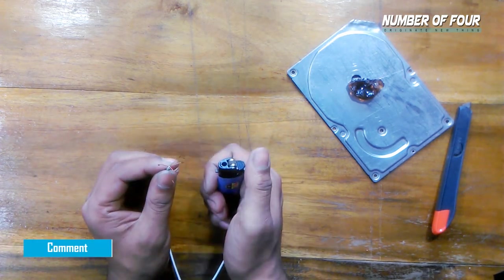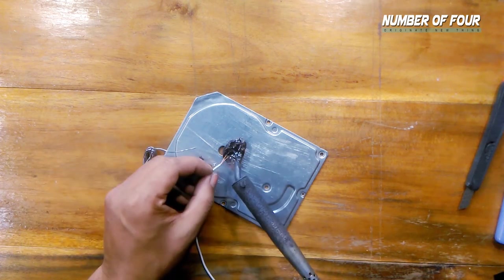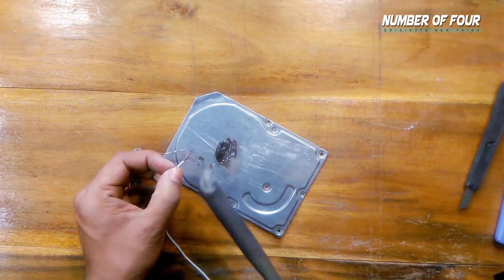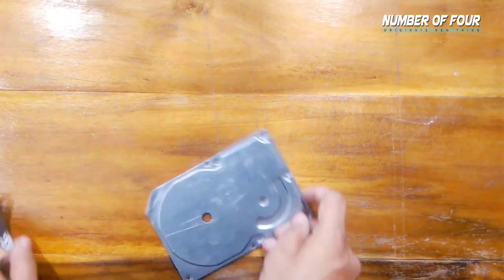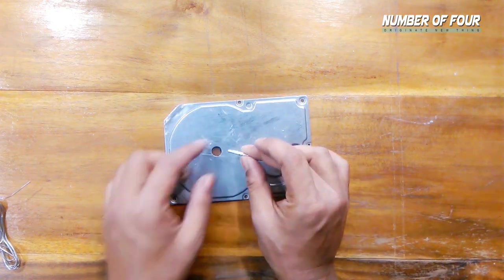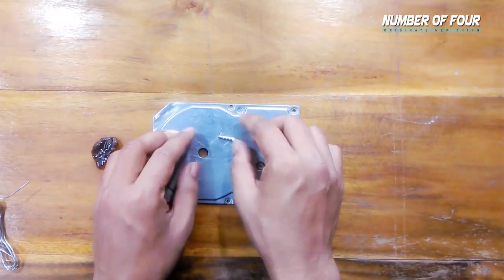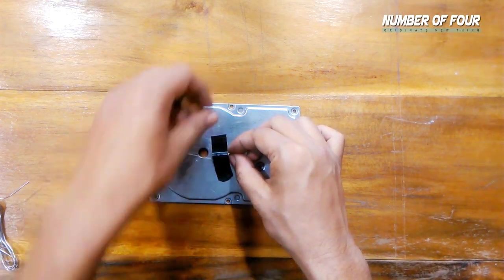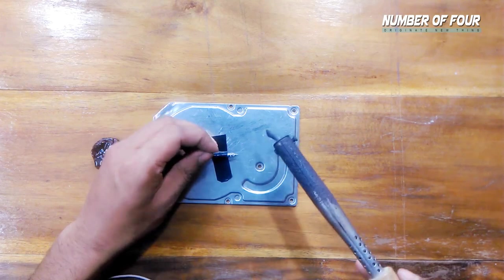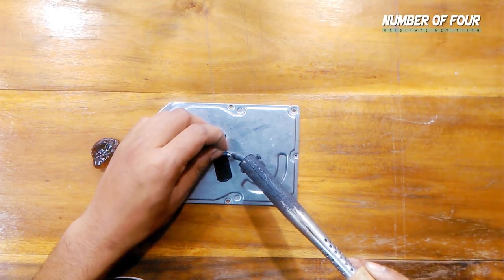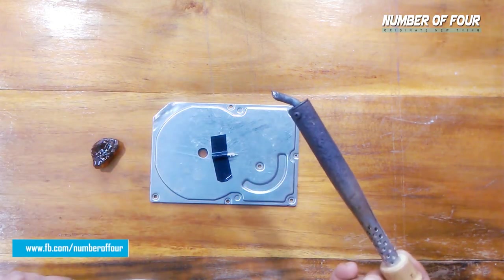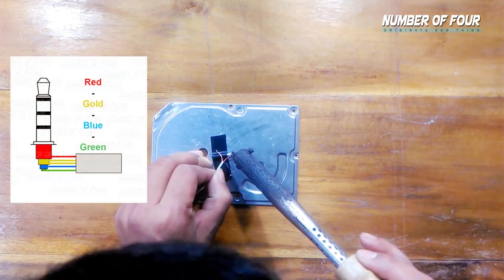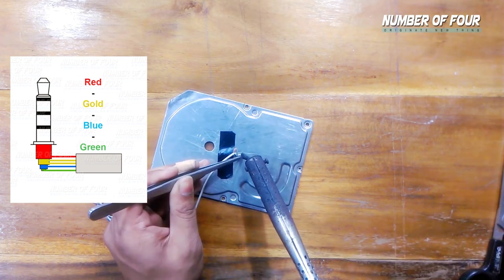Then I use soldering lead to make it easy to solder on the jack. If you are a beginner, it's difficult to solder. Now I solder this red wire. You can follow this soldering information from this image, or you can download this image from my Facebook page link in the description.